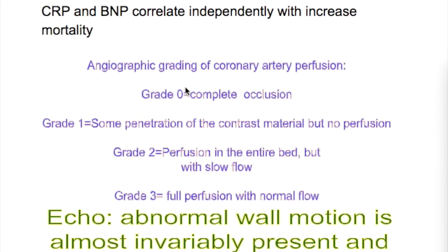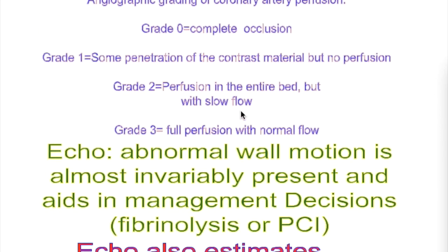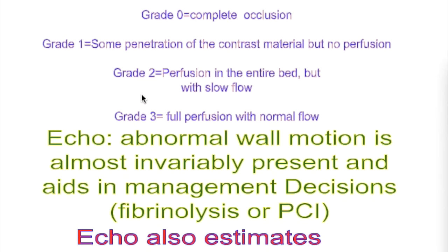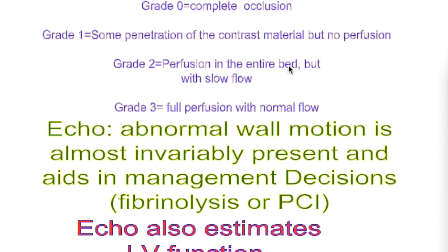What is the angiographic grading of coronary artery perfusion? There are four grades. Grade 0 is complete occlusion. Grade 1 is some penetration of contrast material but no perfusion. Grade 2 is perfusion in the entire bed but with slow flow. Grade 3 is full perfusion with normal flow — and this is what is required in re-canalization or reperfusion.